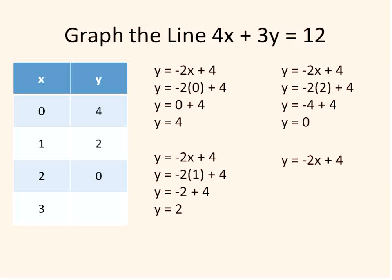Our final x value is 3. Negative 2 times 3 gives us negative 6. Negative 6 plus 4 is negative 2, and so that will be our fourth ordered pair, 3 comma negative 2.